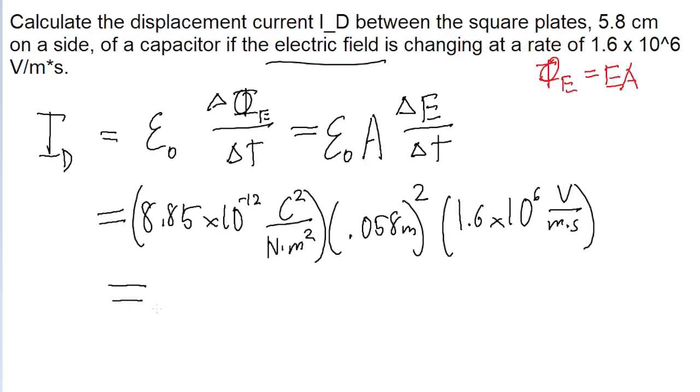And we put that into a calculator, then we find a displacement current of 4.8 times 10 to the power of negative 8 amperes.